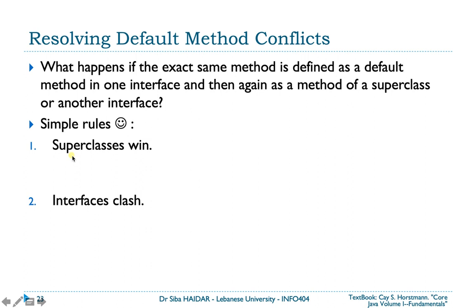There are two simple rules. The first rule is: superclasses win. If there is an implementation of the method in the superclass, it wins — you only have one superclass. The second rule is: interface clashes. If you have two definitions for the same method in two super-interfaces and one subtype that implements both, the compiler will complain and ask you to resolve the conflict yourself.